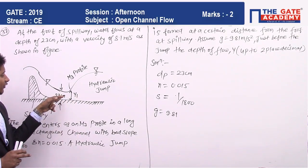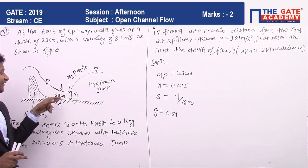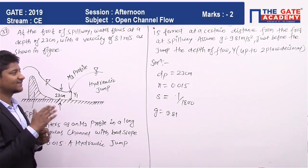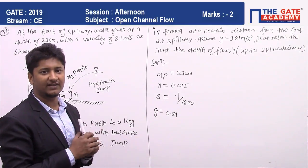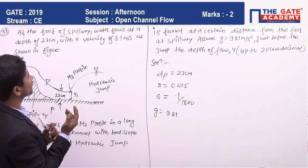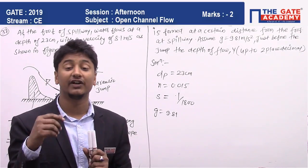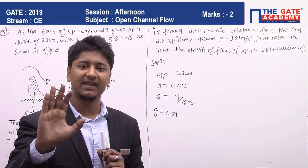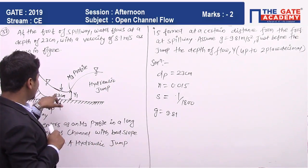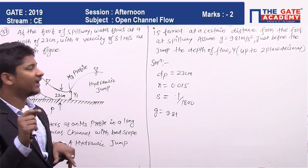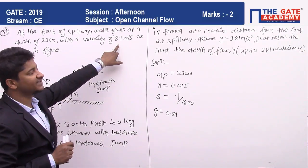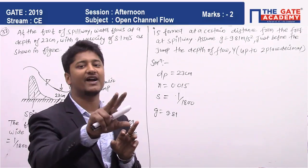This point's depth is 23 centimeters, so Q at this point will equal Q at this point. You can find Q for this point because depth is given. I will take B as the width because it's not a unit width, so area = B × 0.23 × velocity.